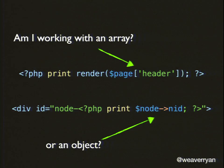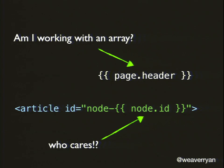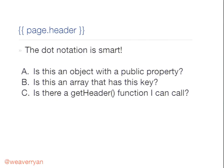One other thing is dot notation. In Drupal 7, you had to know whether something was an array or an object, because they have two different syntaxes even though they work the same way. In Twig, we don't care. We say node.id and page.header — we don't care if they're arrays or objects, because the dot notation handles it. It goes through a cycle: is this an object with a public property? If so, grab it. Not? Is it an array with that key? If so, grab it. Not? Maybe it's an object with a getHeader() method — it'll call that and return the result. When you're theming, you just care about page.header and getting to it quickly.